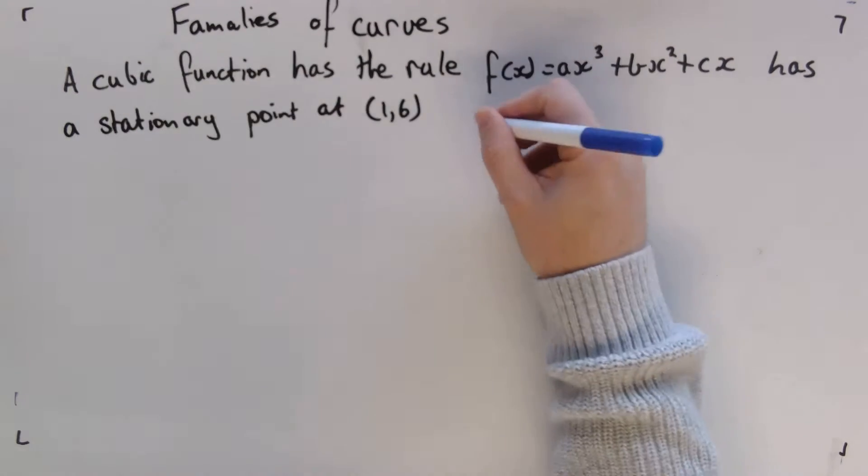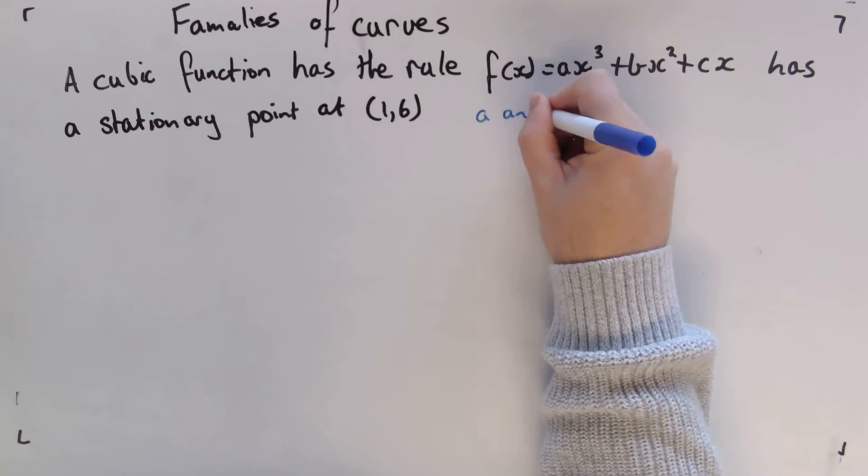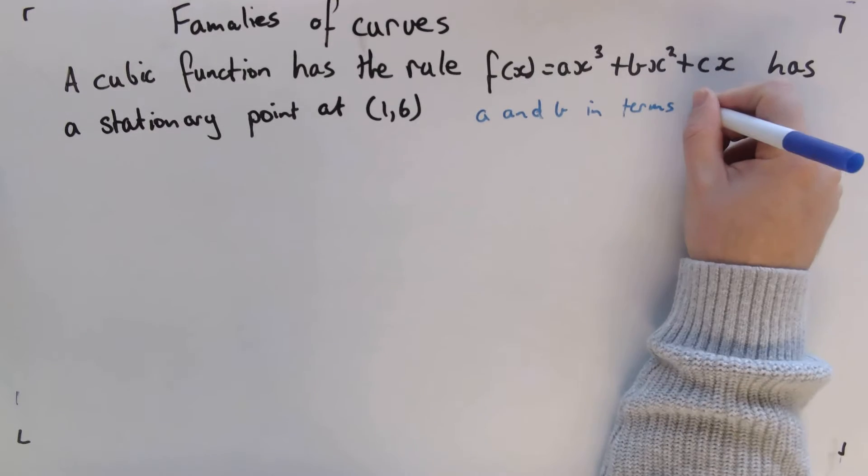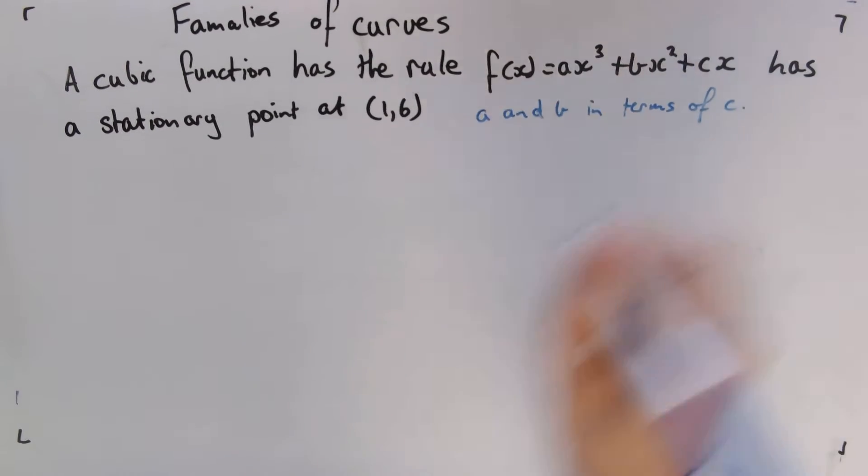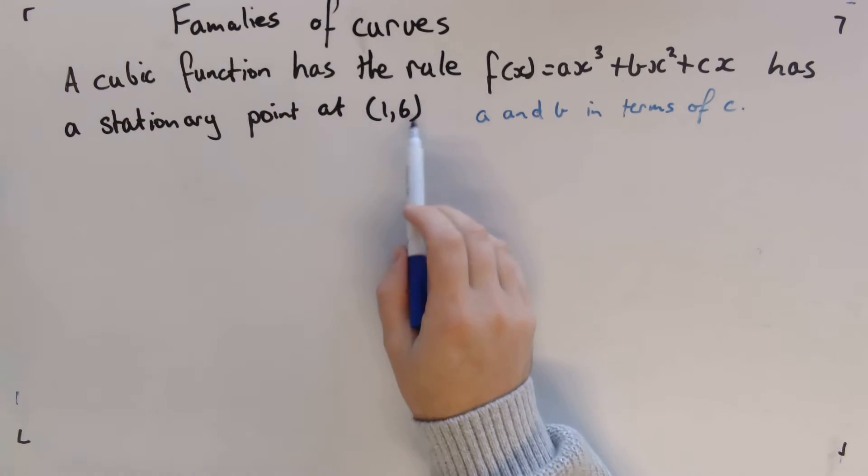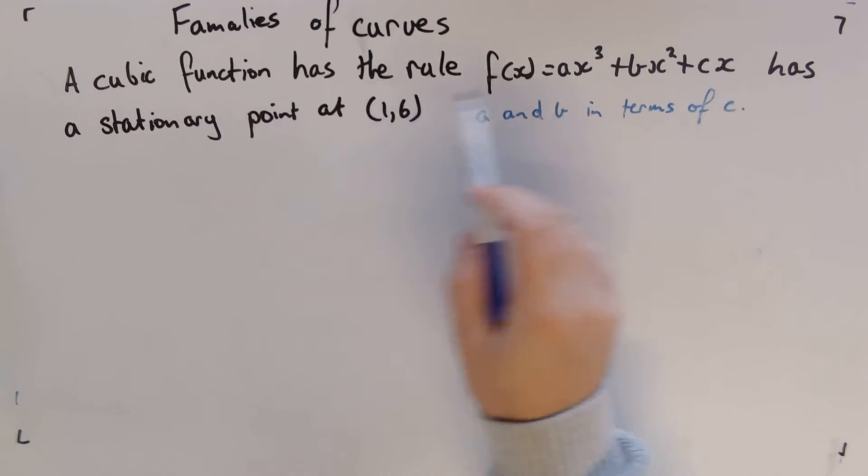The first part of this asks us to find a and b in terms of c. So what we know from this is that it goes through the point (1,6), so we're going to sub that in.